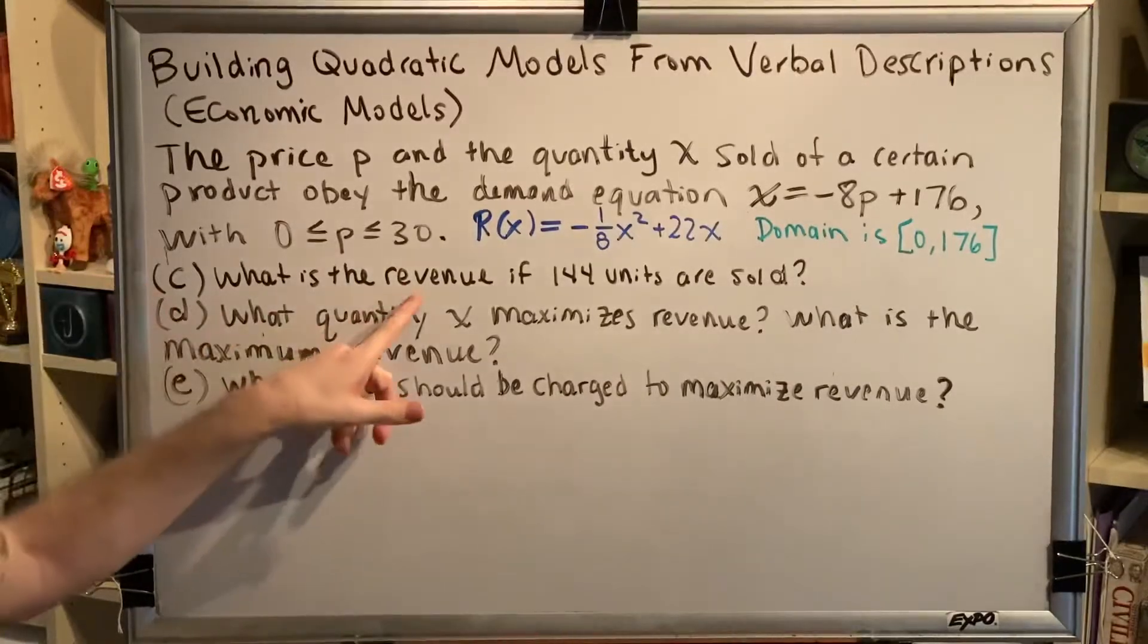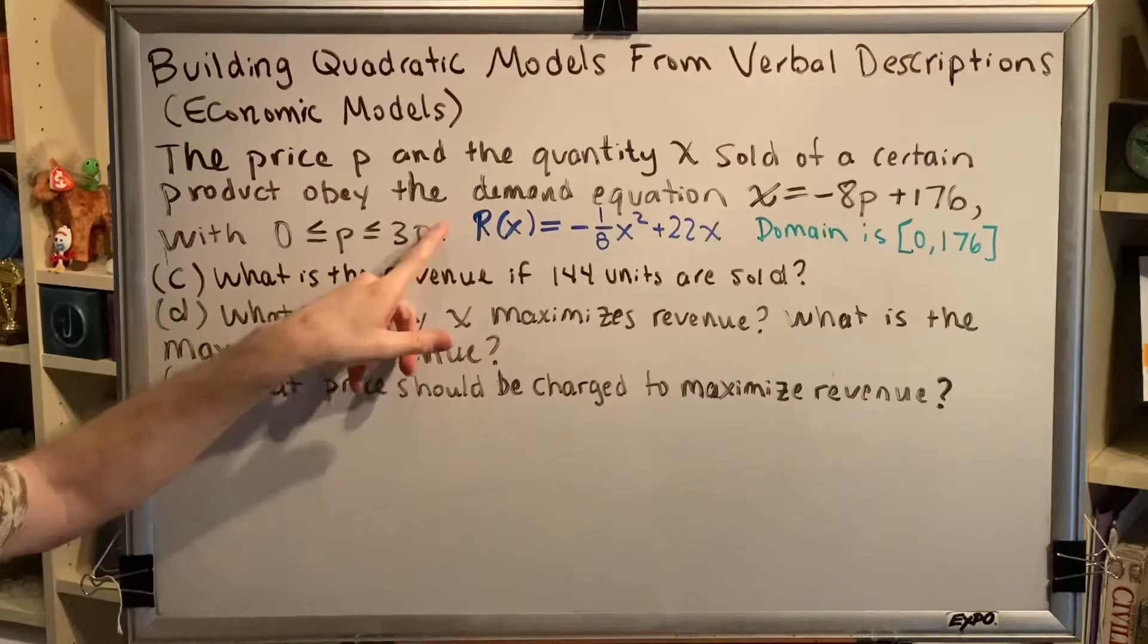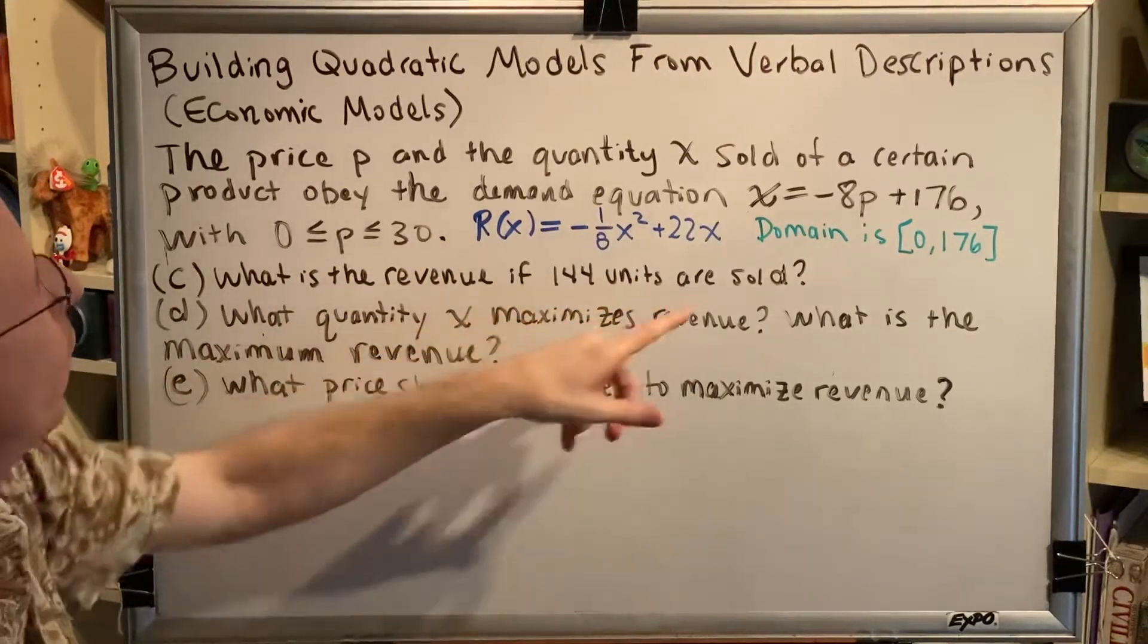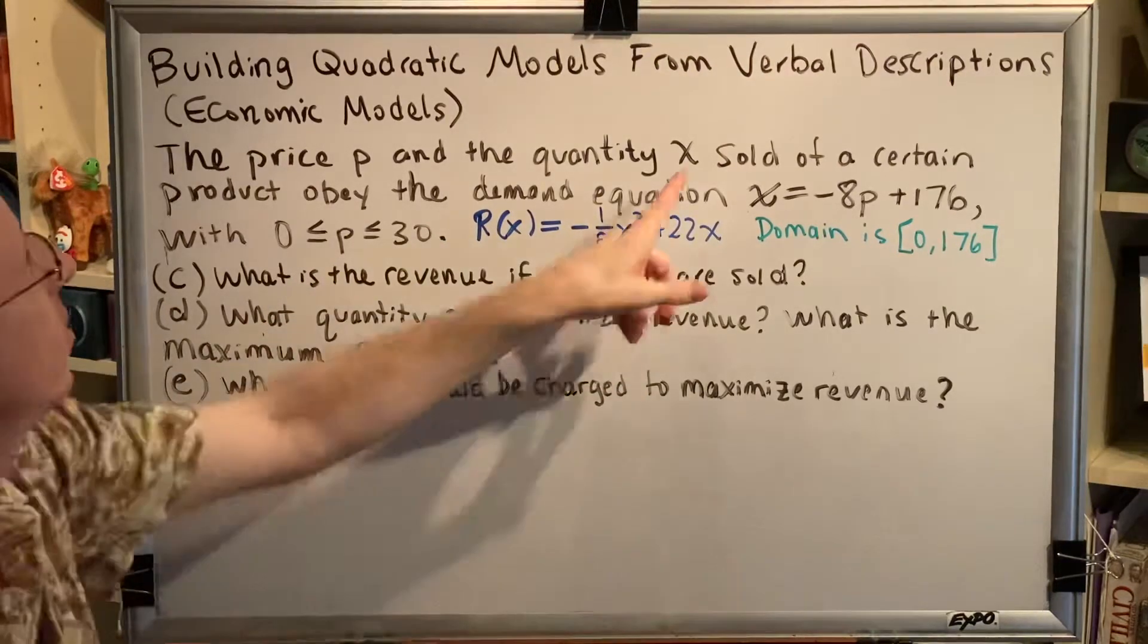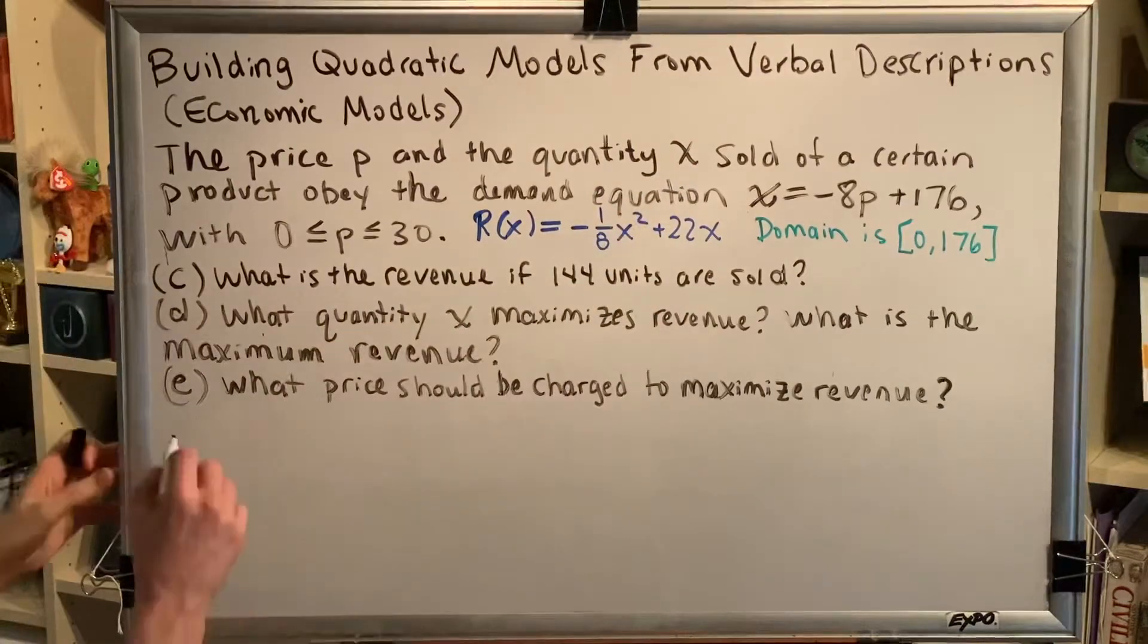In part C, it says what is the revenue, in other words find R, if 144 units are sold. In other words, X is 144. So plug in.